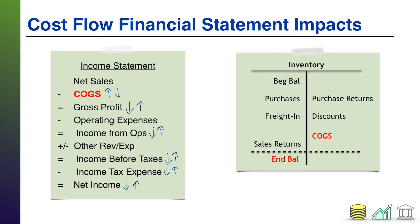This means that if your choice of cost flow results in relatively higher cost of goods sold, your ending inventory balance will end up being lower — and that's the balance reported on the balance sheet. Conversely, if your cost of goods sold is relatively lower, your ending inventory balance will be relatively higher. When I say 'relative,' I mean your cost flow choice relative to the other options, given economic forces like inflation or deflation.